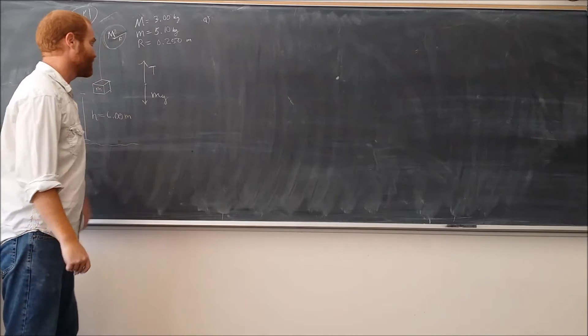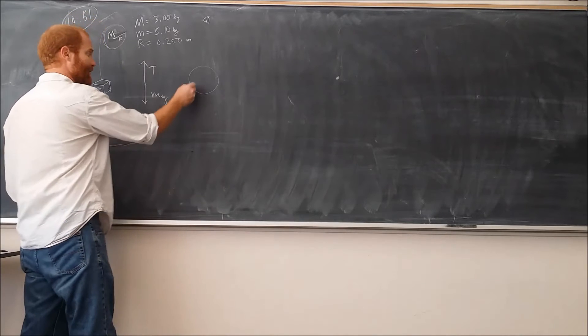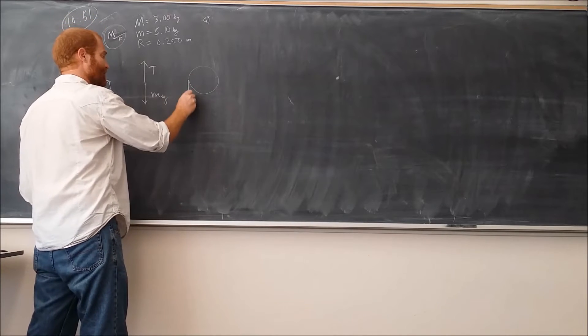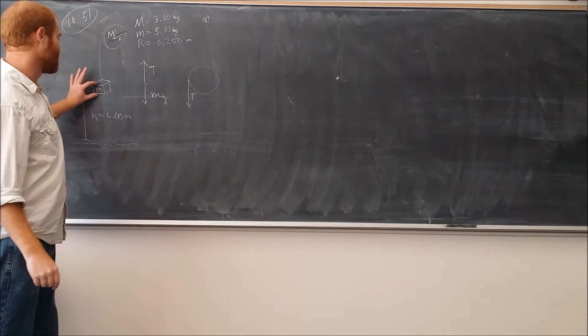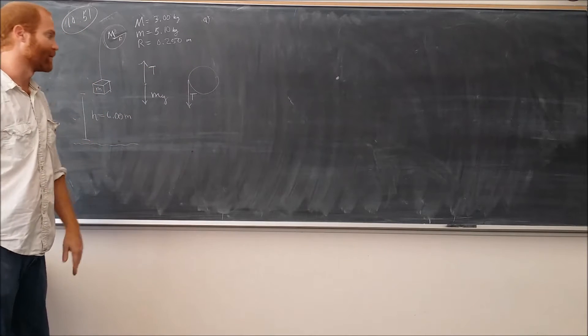For this object here, because it's a rigid object, and when I draw an object itself like this, there's only one force on it, and that's the tension, which is kind of down in this direction here, created by the fact that this object is pulling down. That's going to cause this to rotate with some angular acceleration we're going to call alpha.